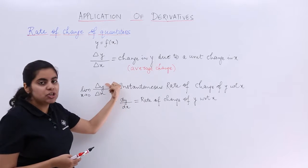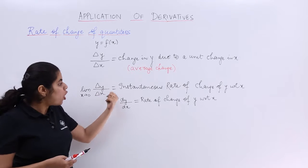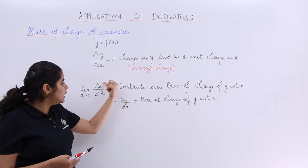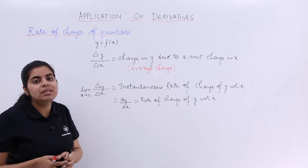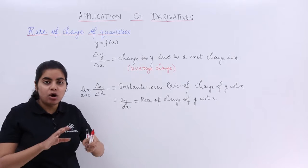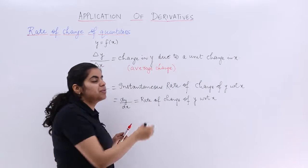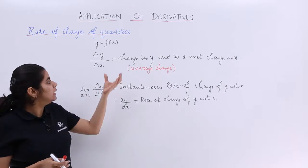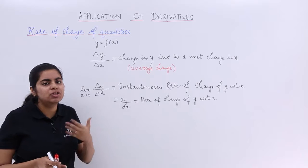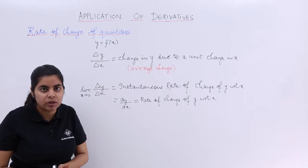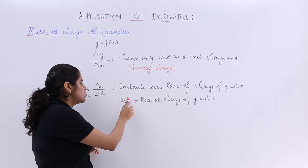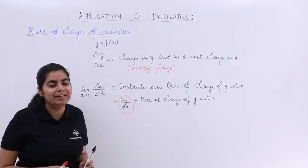So the instantaneous rate of change of y with respect to x or you can say that the dy by dx. Both these things are same. Although instantaneous rate of change is different from average change, we know that del y upon del x will be very much less used in this chapter. You will actually find this notation only which is dy by dx.